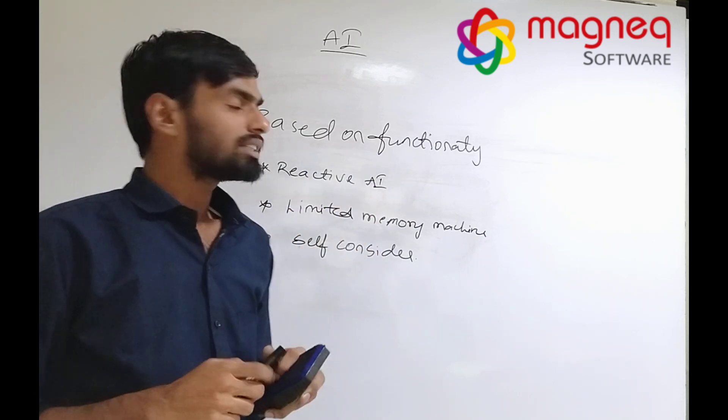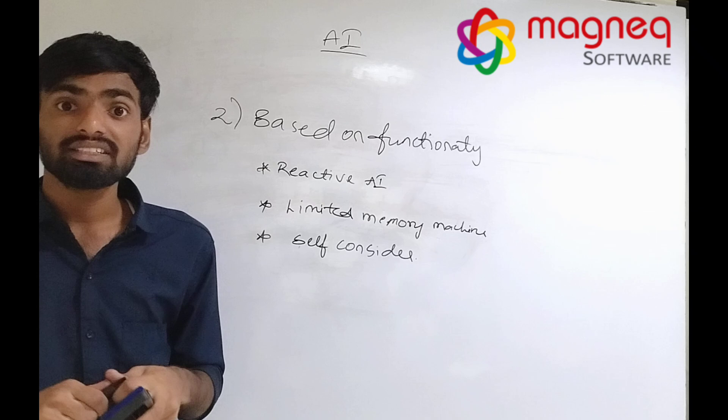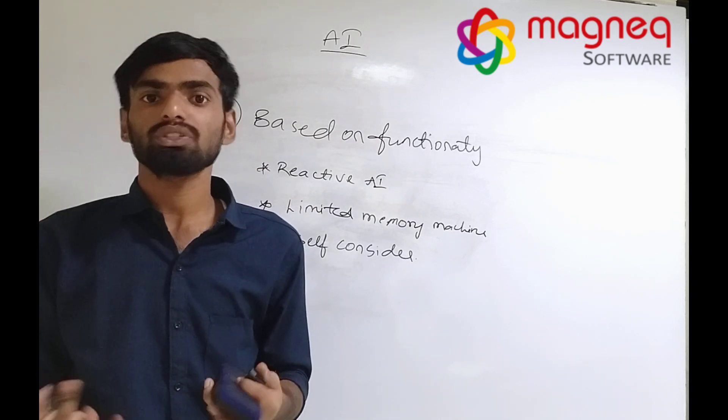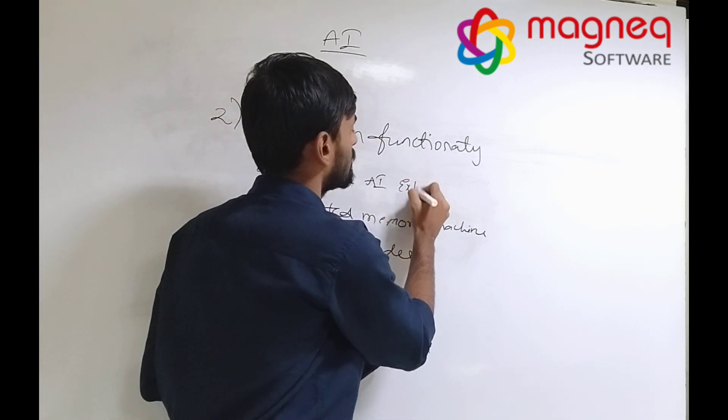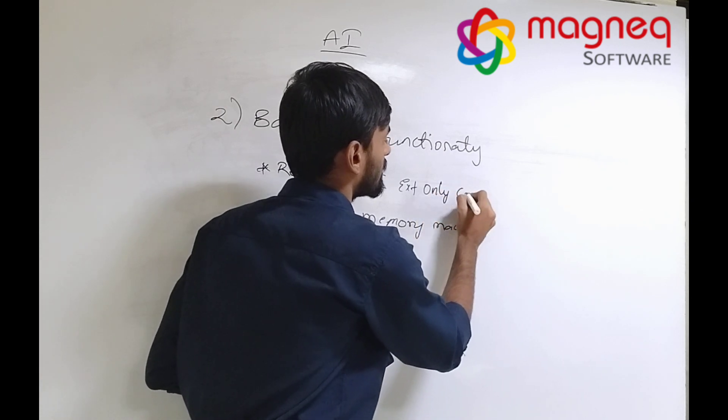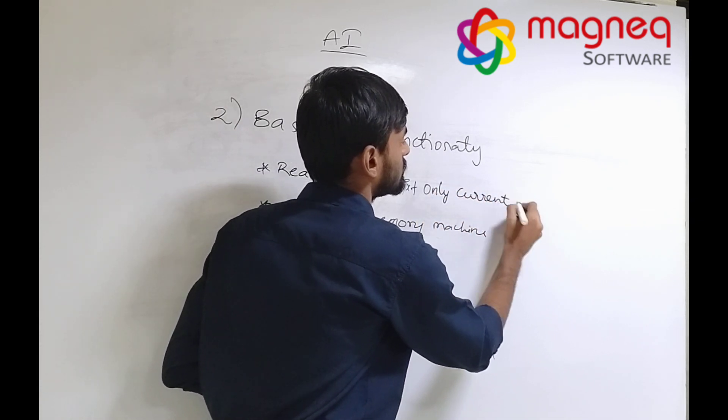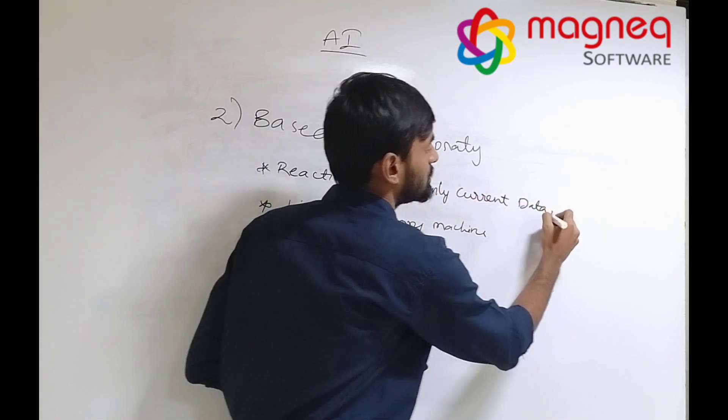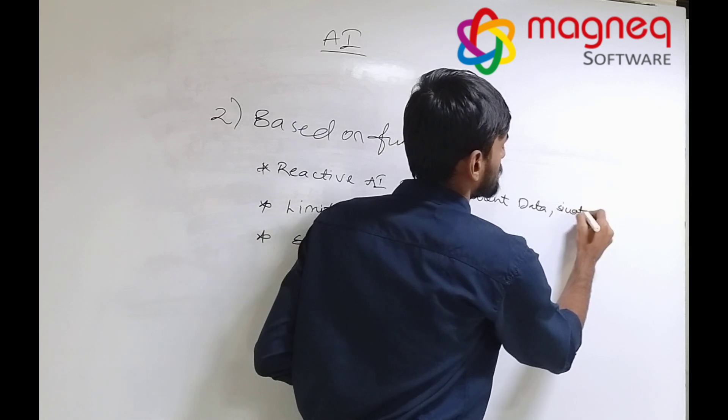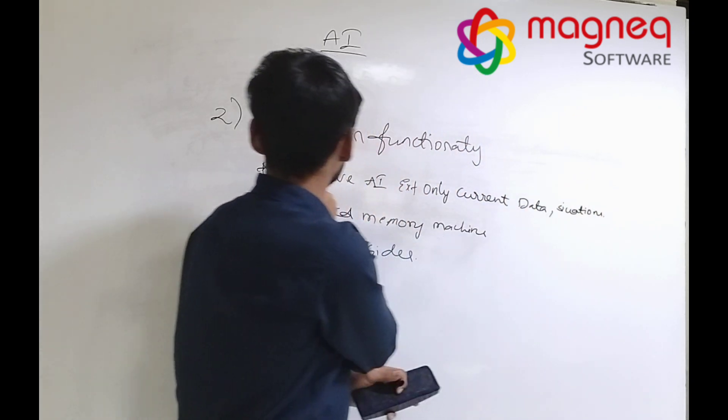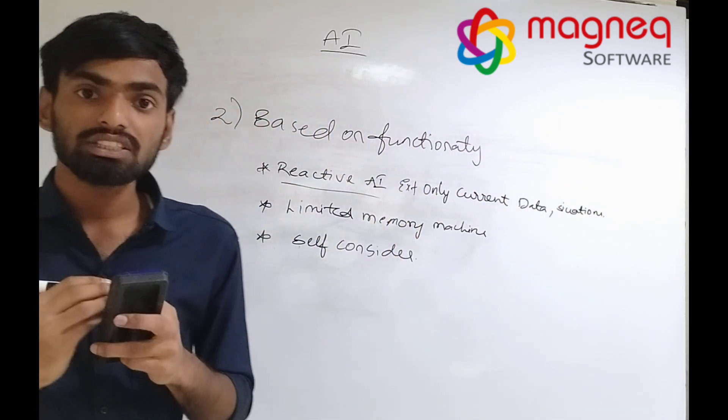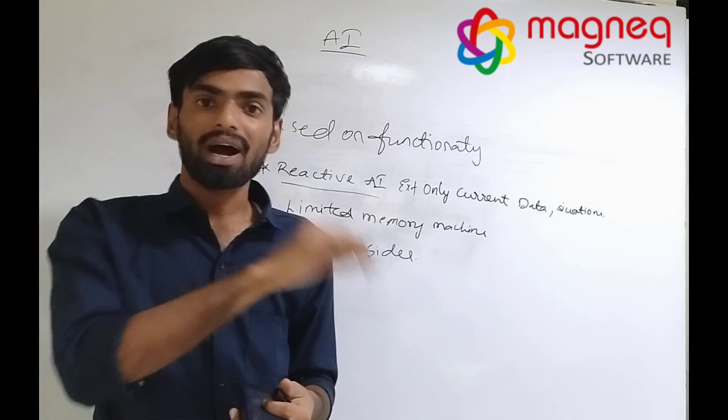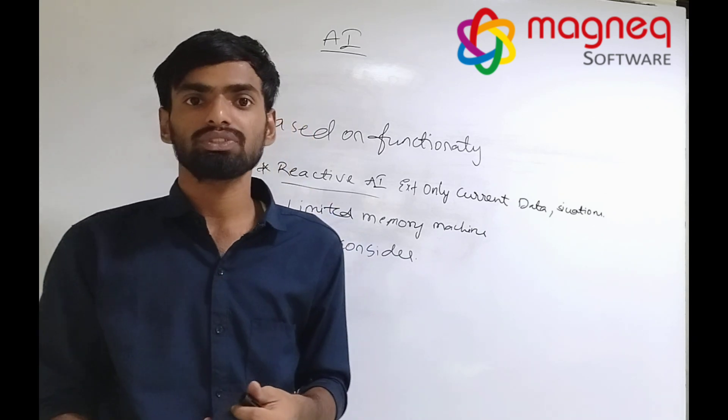Reactive AI doesn't have past data and storage or future data storage. It only uses current data or situations. For example, it only considers current situations, not past data storage or future data storage.